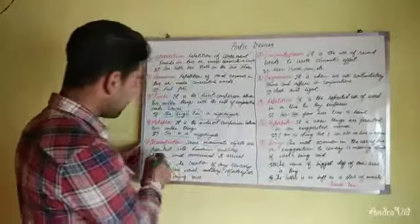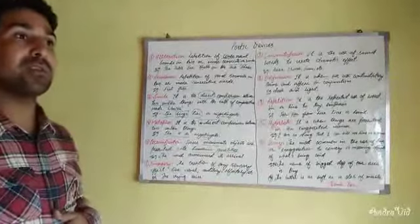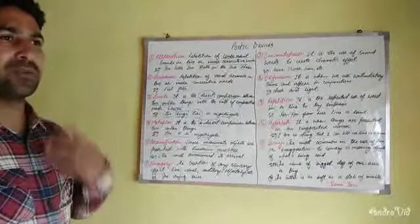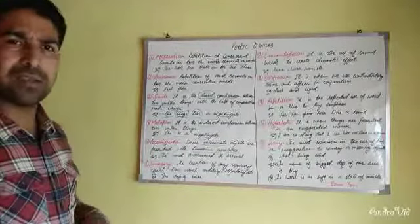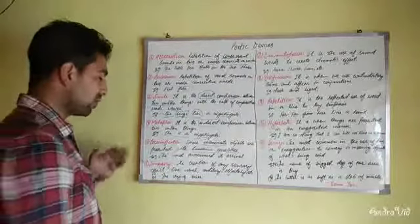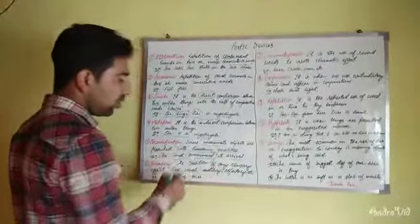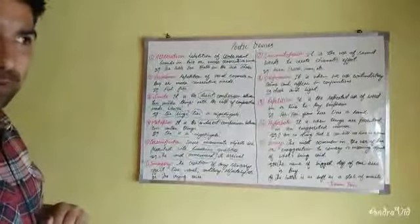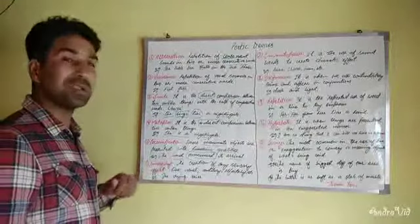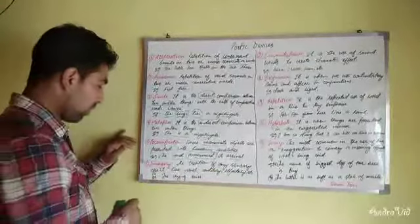Personification is when inanimate objects are presented with human qualities. When human qualities are given to things that are not human — like animals, birds, trees, plants, or any other object — it is personification. For example: 'The wind announced its arrival.' The word 'announced' is something only humans can do, so this human quality is given to the wind, an inanimate object.